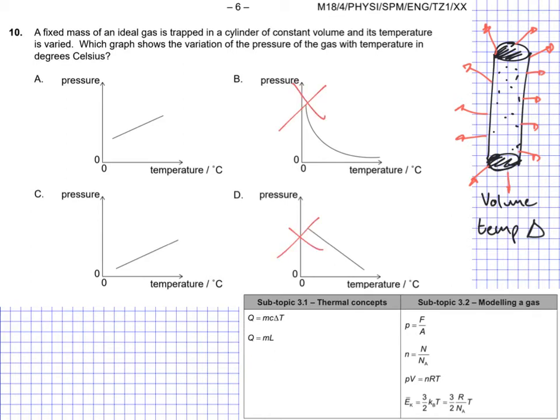And so right away we can almost eliminate two of these right away just by thinking about this in terms of the kinetic model of matter. We're going to eliminate probably this one and this one, because both B and D here are showing a negative correlation. In other words, as the temperature increases, the pressure decreases. And that doesn't fit with the model that we've been thinking about.